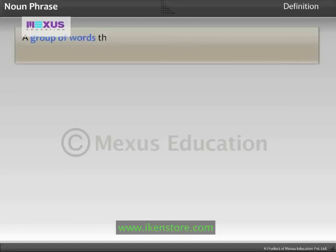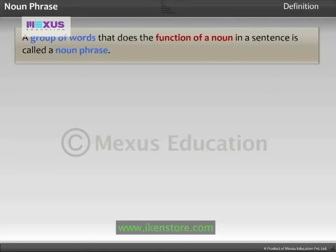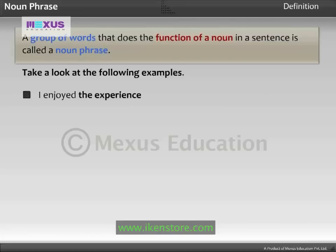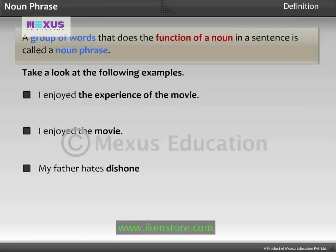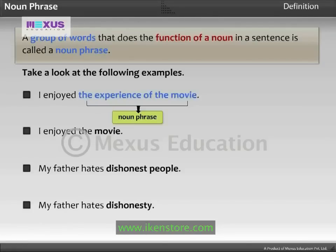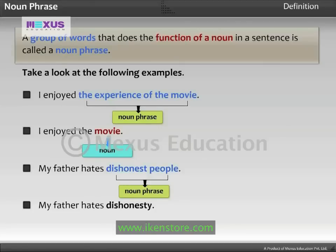A group of words that does the function of a Noun in a sentence is called a Noun Phrase. Take a look at the following examples. The phrases 'The Experience of the Movie' and 'Dishonest People' perform similar functions as the Nouns 'Movie' and 'Dishonesty' respectively.